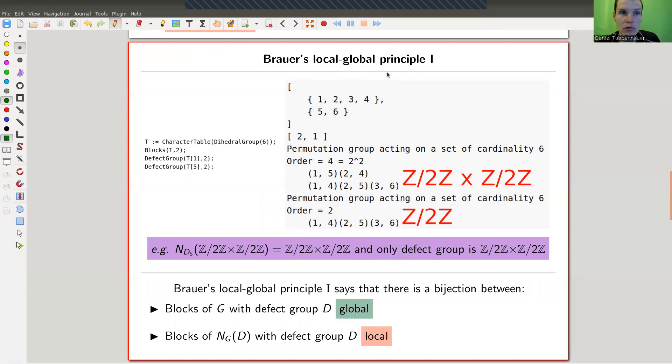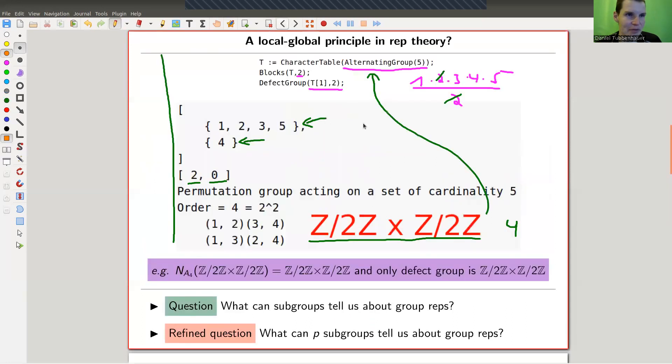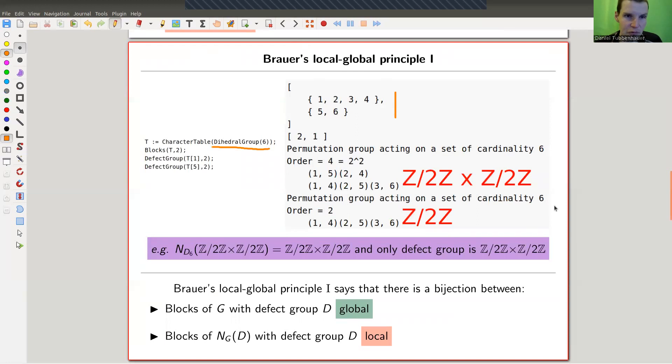Here's really how it works. Brouwer's local-global principle. Kind of everything in modular representation theory at one point goes back to Brouwer. I have my block here. This is another example, a dihedral group of order 6, but still blocks in characteristic 2. I have two non-trivial defect groups: Z2 cross Z2 for the first one and Z2 for the second one. It turns out the same story is true. Z2 cross Z2 has only one defect group itself, namely itself, and same for Z mod 2Z.